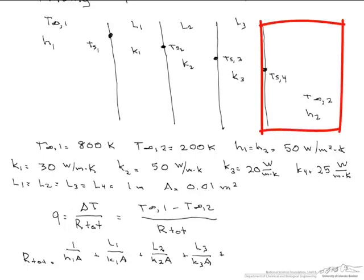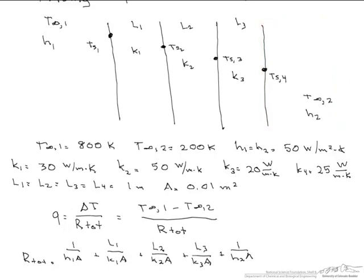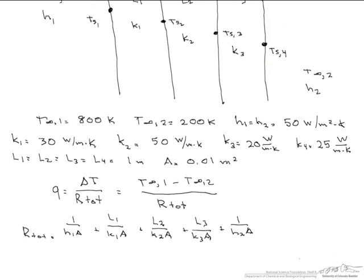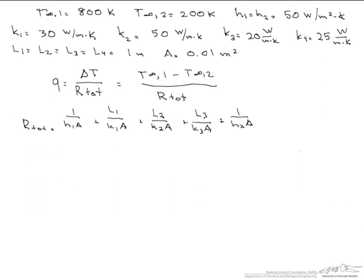Finally, we have our second convective resistance between the wall and the outside temperature. I will demonstrate how to find some of these resistances. Let's start with the first one, which is 1 over H1, the heat transfer coefficient or convective heat transfer coefficient, times the area that the heat transfer goes through.